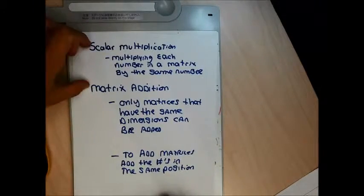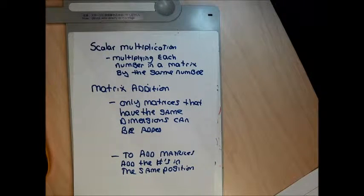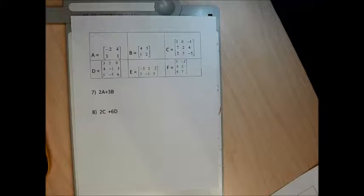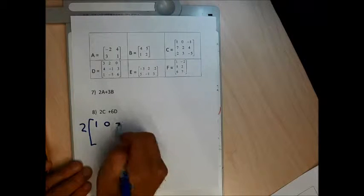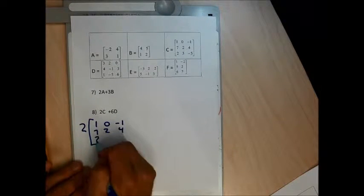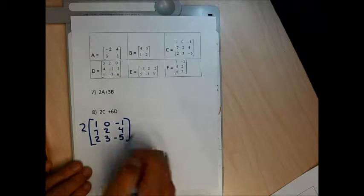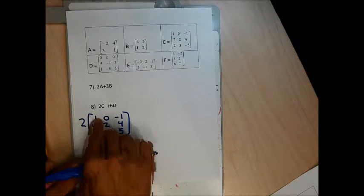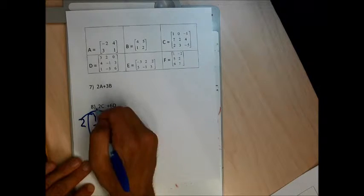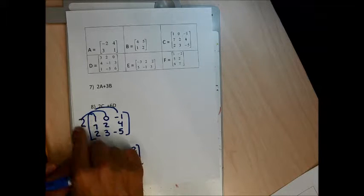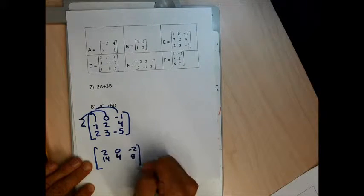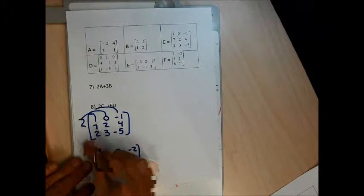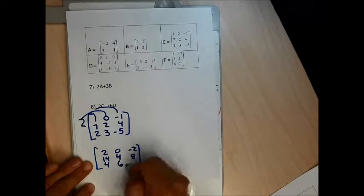Problems 7 and 8 are going to be a combination of scalar multiplication and matrix addition. You have to do multiplication before addition, just like regular arithmetic. Problem 8 says take 2C plus 6D. First I have to find out what 2C is: take every entry in the C matrix and multiply by 2. So 2 times 1 is 2, 2 times 0 is 0, 2 times negative 1 is negative 2, 2 times 7 is 14, 2 times 2 is 4, 2 times 4 is 8, 2 times 2 is 4, 2 times 3 is 6, 2 times negative 5 is negative 10.